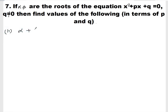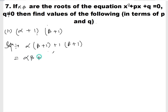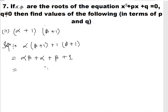Roman number 2: (α + 1)(β + 1). Expanding this gives αβ + α + β + 1. We know α + β = -p and αβ = q.